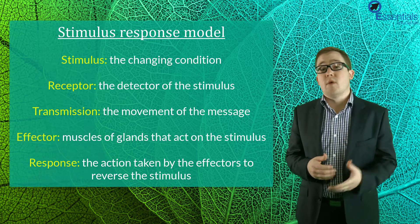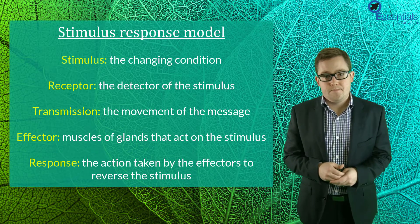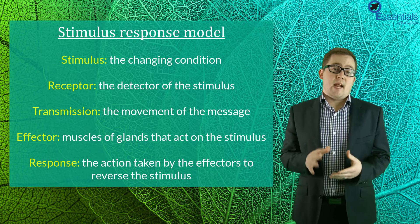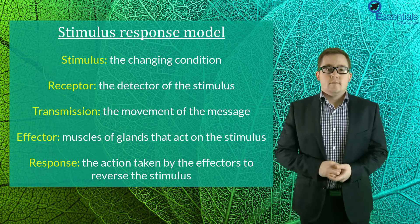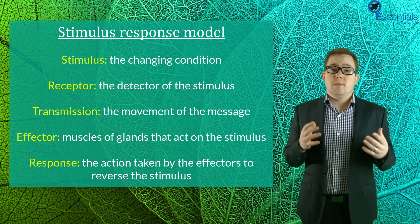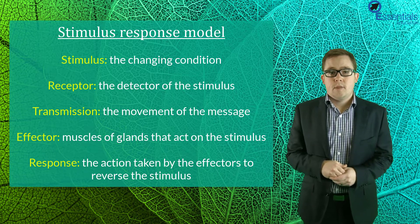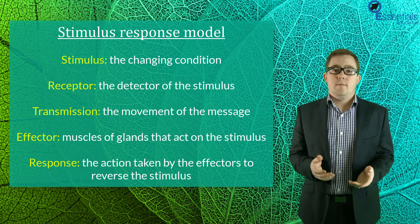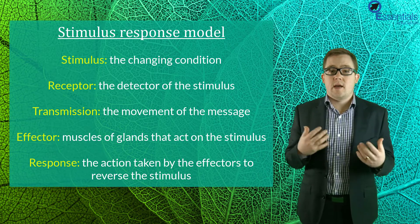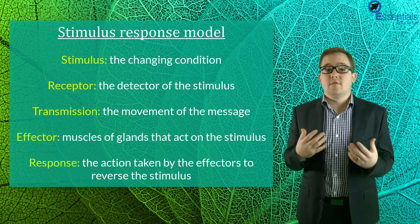Now to help better understand the specifics of negative feedback controls, scientists devised the stimulus response model which we'll now go through. The stimulus response model has five main elements: stimulus, which refers to the changing condition to be detected by the organism; receptor, which refers to the detector of the stimulus, and this is usually your senses like eyes, ears, nose, mouth and skin.